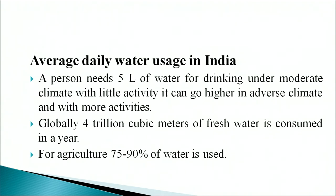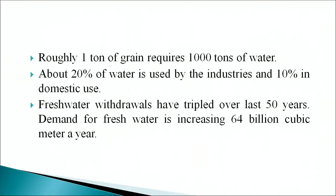On a daily basis, we use about 10 billion tons of fresh water worldwide. Average daily water usage in India: a person needs about 5 liters of water for drinking under a moderate climate with little activity, which can go higher in adverse climates and with more activities. Globally, 4 trillion cubic meters of fresh water is consumed in a year. For agriculture, 75 to 90 percent of water is used, and roughly 1 ton of grain requires 1000 tons of water. About 20 percent is used by industries and 10 percent in domestic use. Fresh water withdrawals have tripled over the last 50 years, and demand is increasing by 64 billion cubic meters a year.